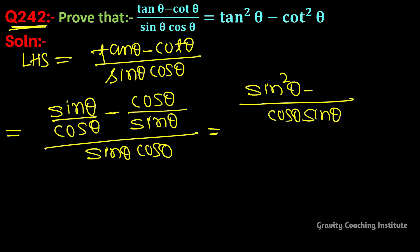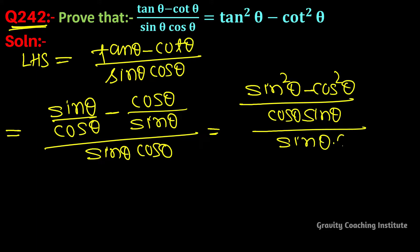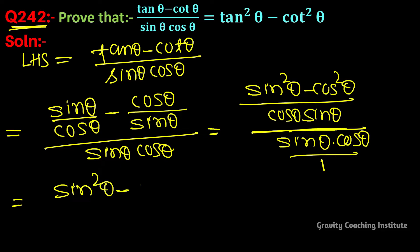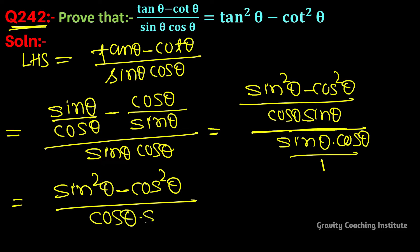This gives us (sin²θ - cos²θ) divided by (sin θ · cos θ), with the outer factor of (cos θ / sin θ · cos θ), simplifying to (sin²θ - cos²θ) upon (cos θ · sin θ).